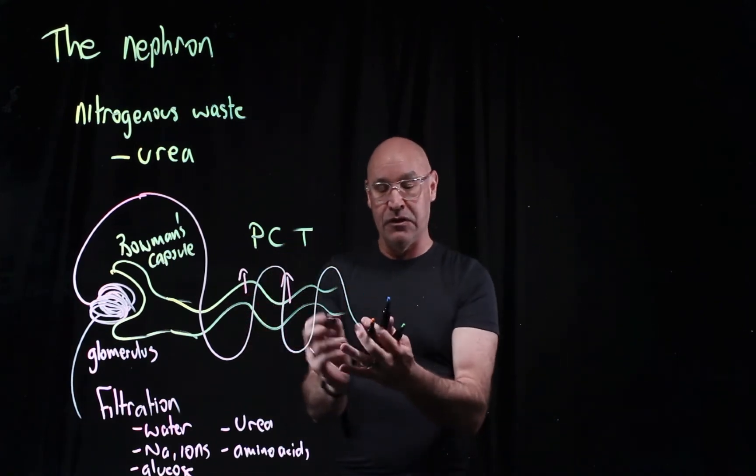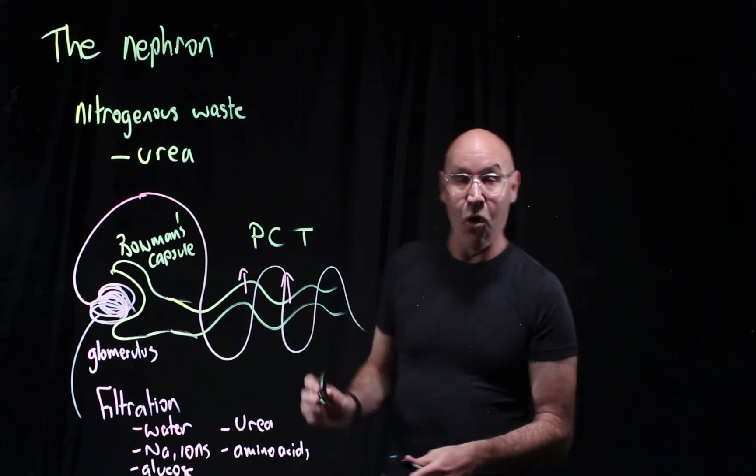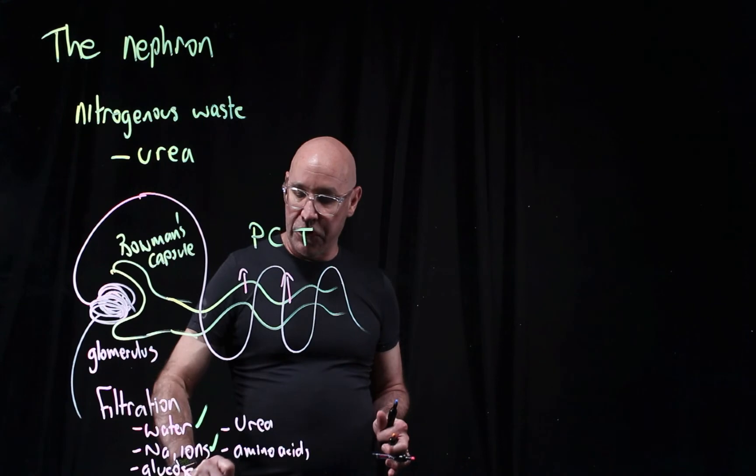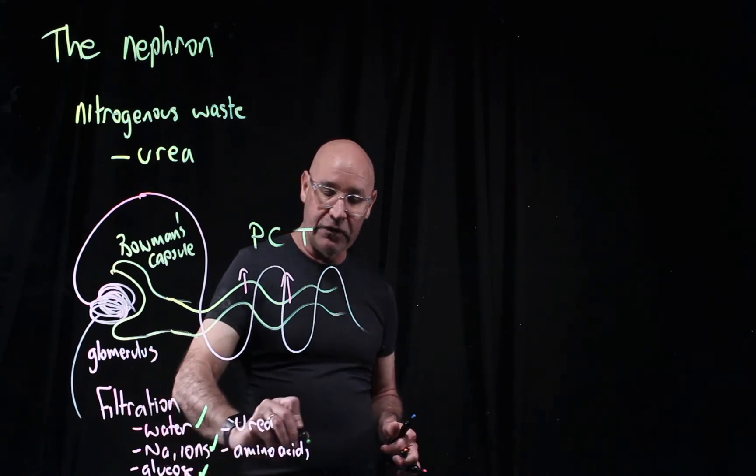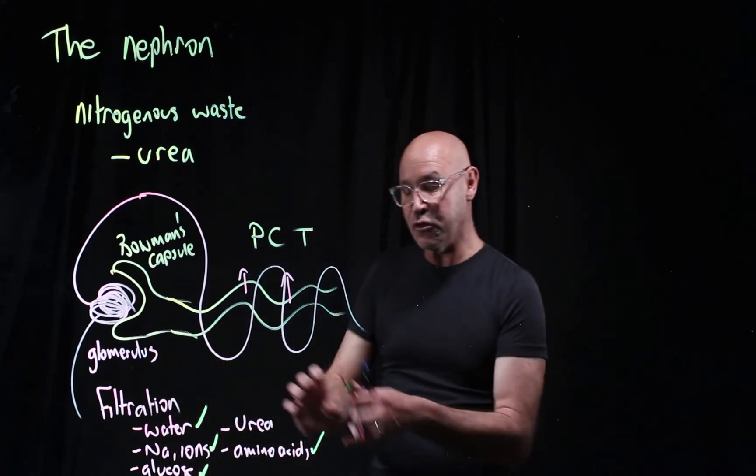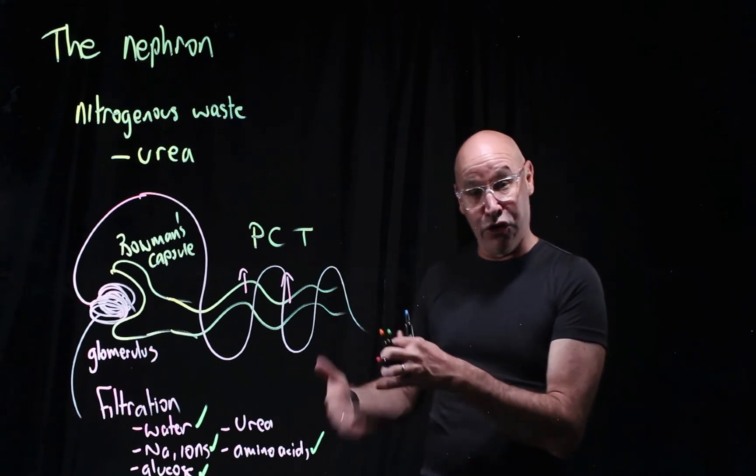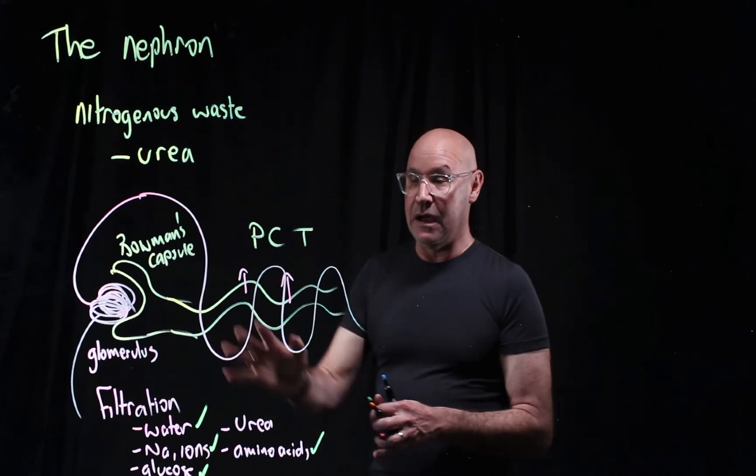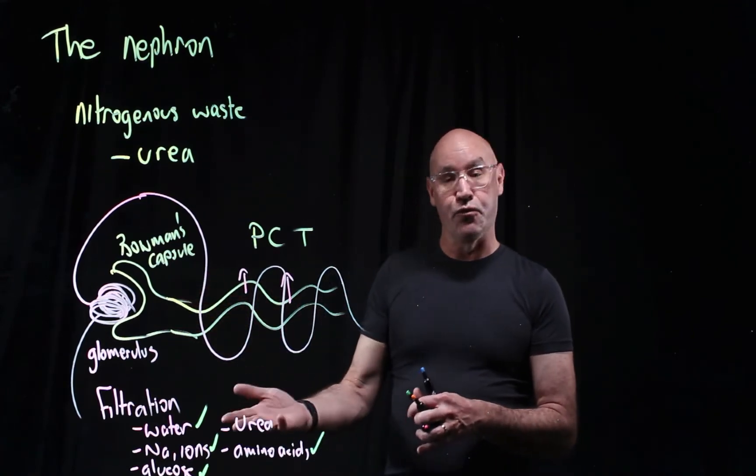What gets reabsorbed? All the important stuff: much of the water, much of the sodium, the glucose, and the amino acids. These are amino acids that the body will use to make proteins. What stays in the nephron is the urea.